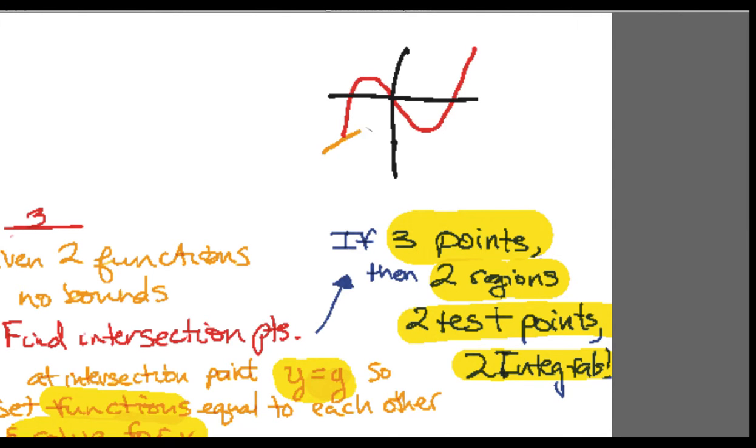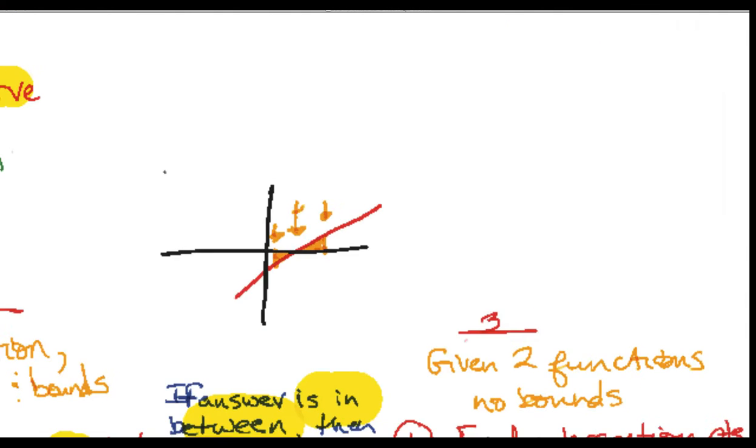So you can see that there's one, two, three intersection points, so we would need a test point in this region and another different test point in that region, and the top and the bottom would switch. So we'd have two distinct integrals: the first one would go from this value to intersection point two, and then the second one will go from that one again to this one there.